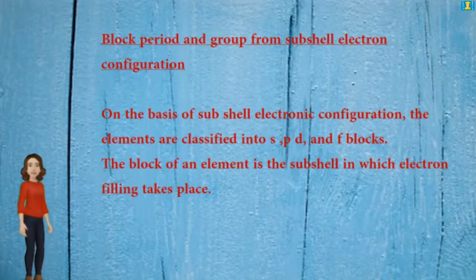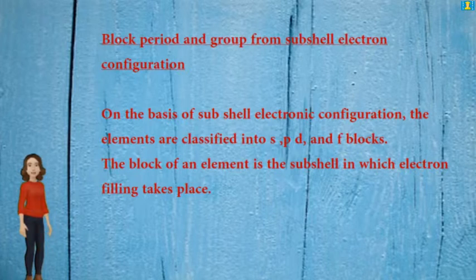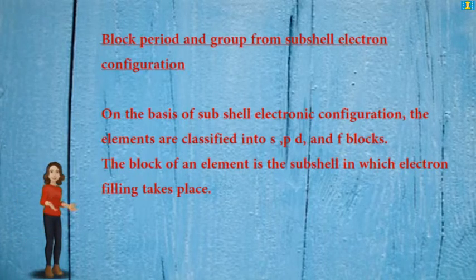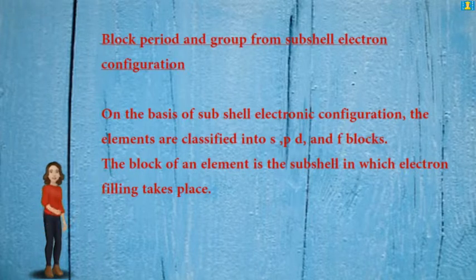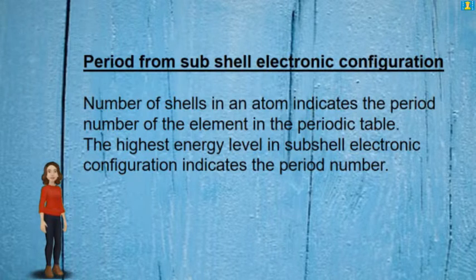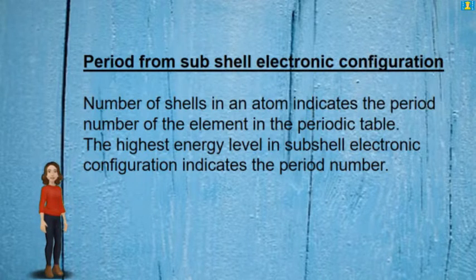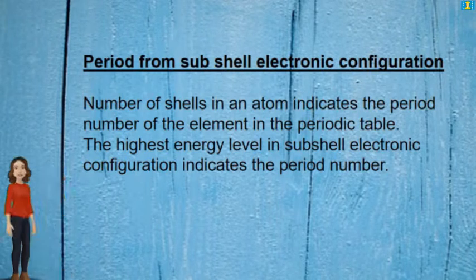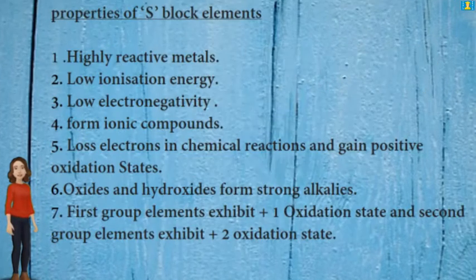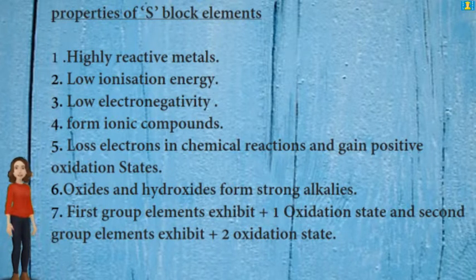Block, period, and group from subshell electron configuration: on the basis of subshell electronic configuration, elements are classified into S, P, D, and F blocks. The block of an element is the subshell in which the last electron filling takes place. The number of shells in an atom indicates the period number of an element in the periodic table. The highest energy level in the subshell electronic configuration indicates the period number.